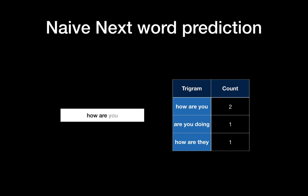So we have the given data here: 'how are you' and 'how are they.' The count of 'you' is higher than 'they,' so we can just give 'you' instead of 'they.' That's one way of next word prediction using trigrams.